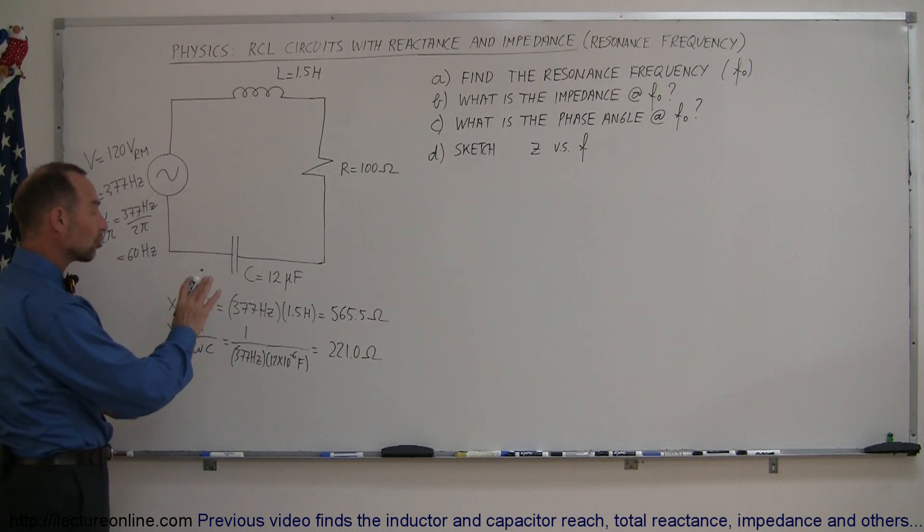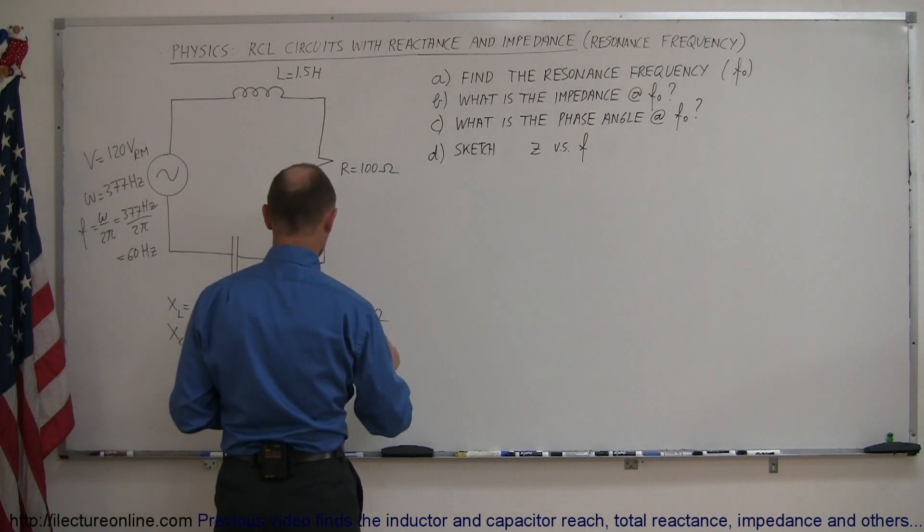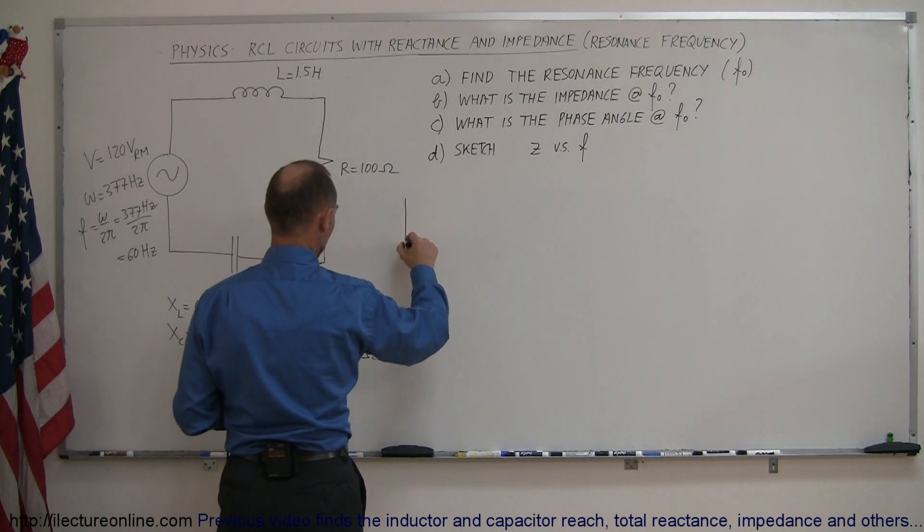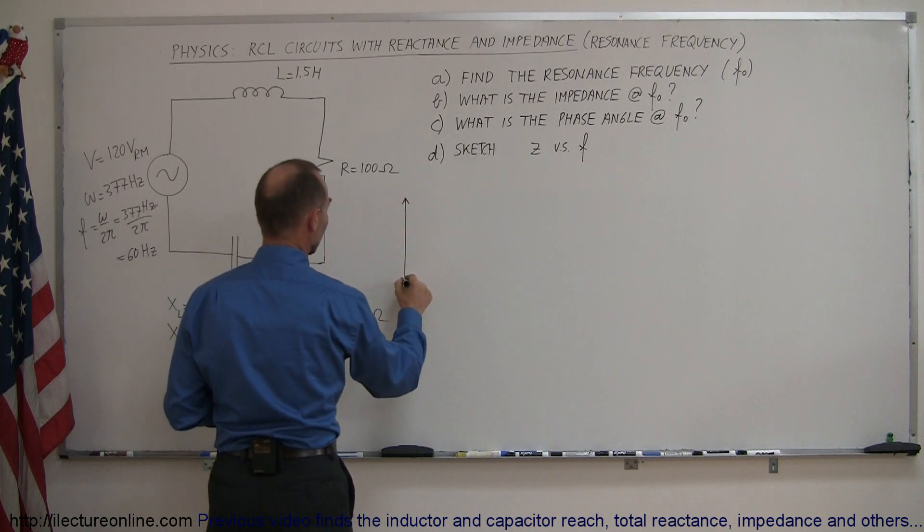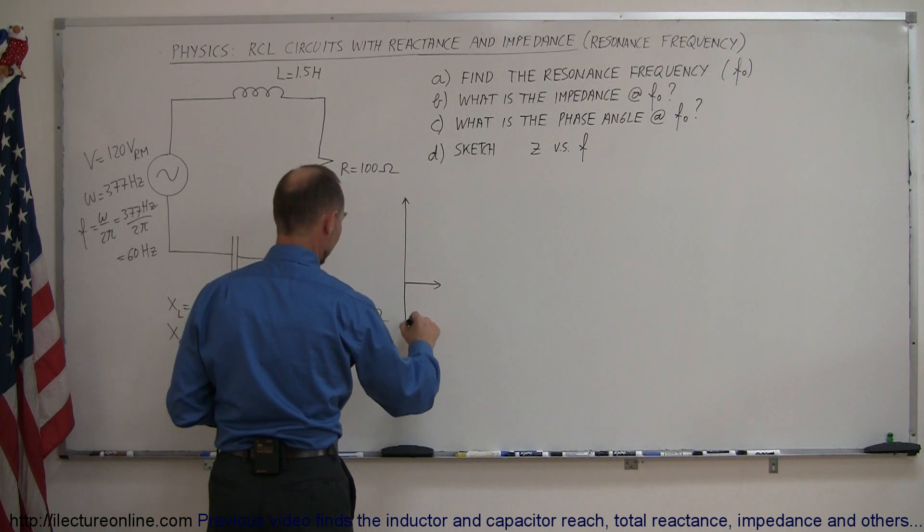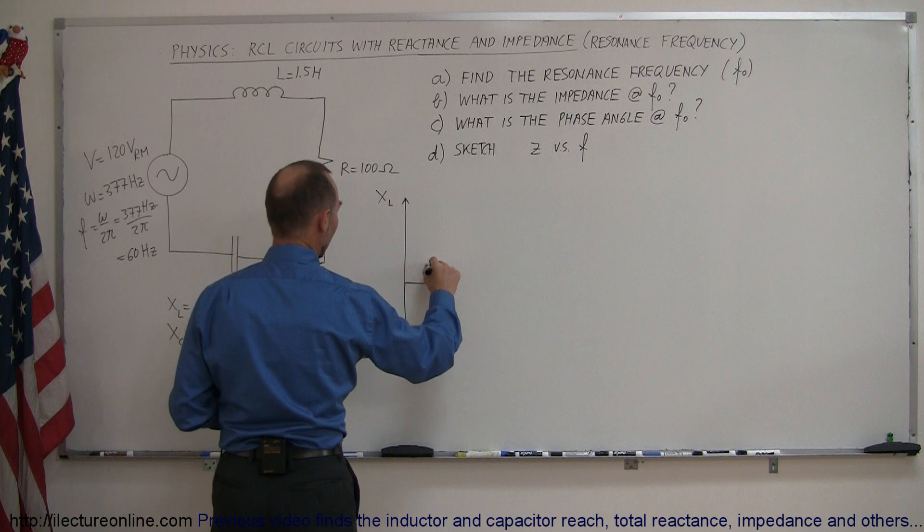So if I were to draw a phasor diagram now using this information, what would it look like? We have an X sub L, which is quite large. We have a resistance, which is relatively much smaller, and we have X sub C, which kind of looks like that. So we have X sub L, we have X sub C, and we have R.